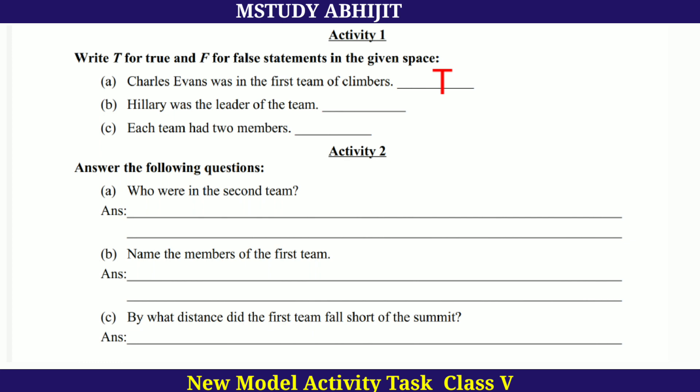True and false statements. 'Hillary was the leader of the team' — this is false. Hunt led the team; John Hunt was the leader. Next question: 'Each team had two members.' The first team included Tom Bardillon and Charles Evans, and Edmund Hillary and Tenzing Norgay made up the second team. Each team had two members — this is true.